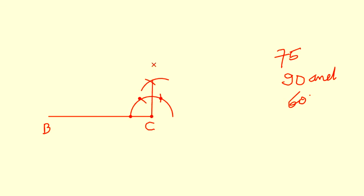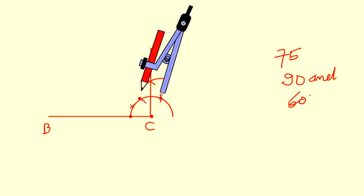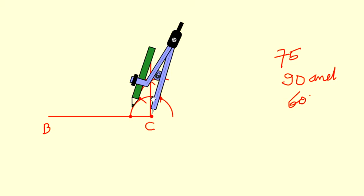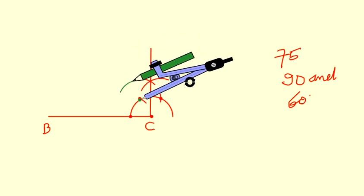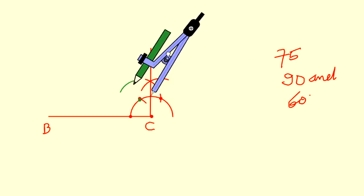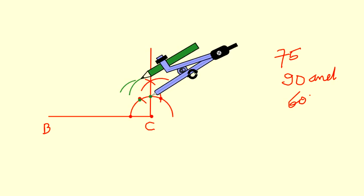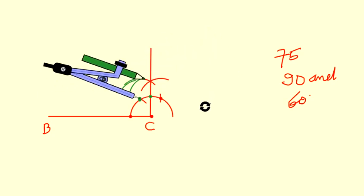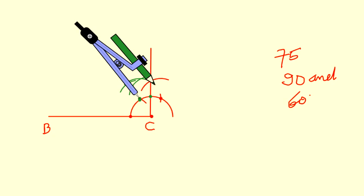This is your 90 degrees exactly. To get 75 degrees: first from the 60-degree mark cut an arc, then from the 90-degree mark cut an arc. The intersection of these two arcs gives the required point. Join this point with C — this line gives the 75-degree angle.